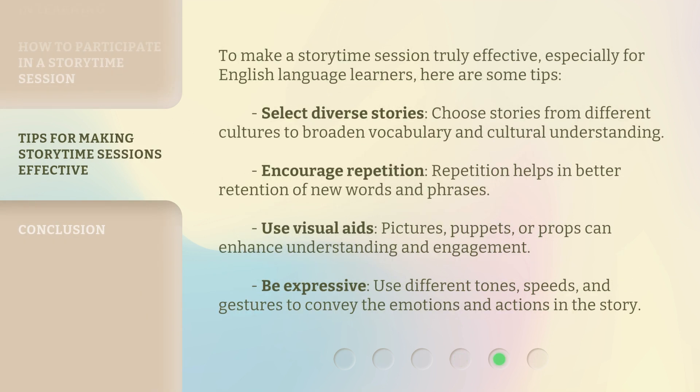To make a Storytime Session truly effective, especially for English language learners, here are some tips. Select diverse stories — choose stories from different cultures to broaden vocabulary and cultural understanding. Encourage repetition, as it helps with better retention of new words and phrases. Use visual aids like pictures, puppets, or props to enhance understanding and engagement. Be expressive — use different tones, speeds, and gestures to convey the emotions and actions in the story.